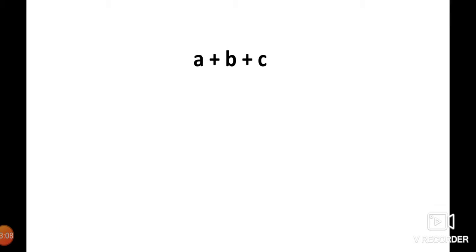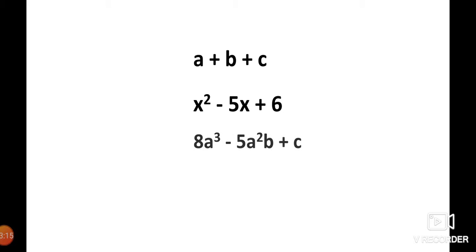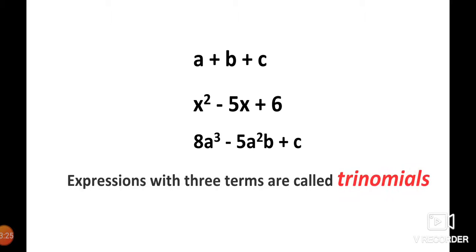See another example: a + b + c, x² − 5x + 6, and 8a³ − 5a²b + c. In each of these algebraic expressions, three terms are present. So algebraic expressions with three terms are called trinomials.